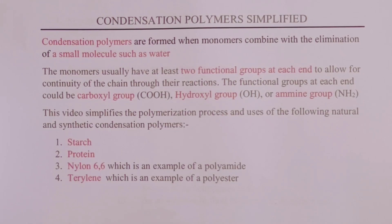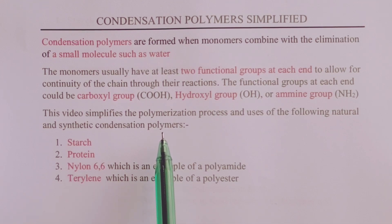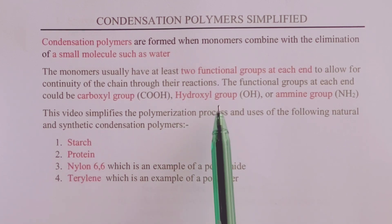Condensation polymers simplified. We have two types of polymers: addition polymers and condensation polymers. Condensation polymers are those formed when monomers combine with the elimination of a small molecule, such as water.